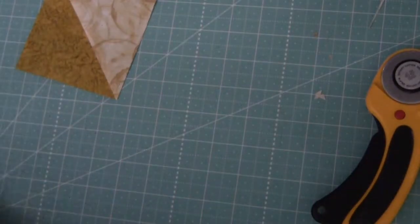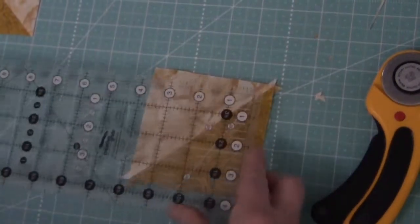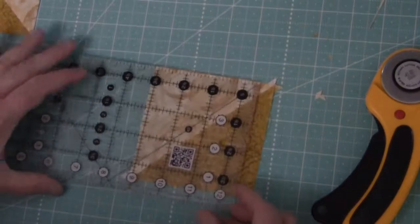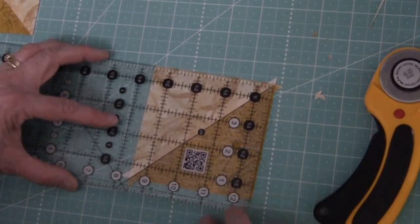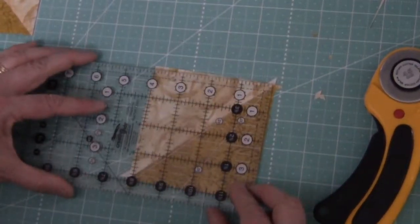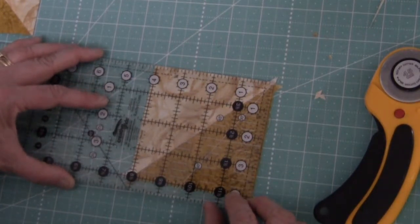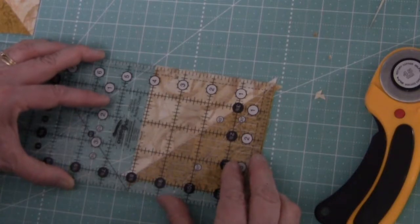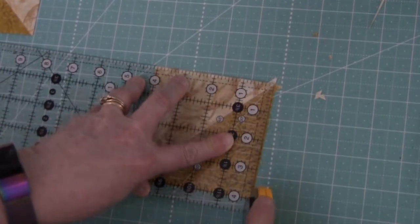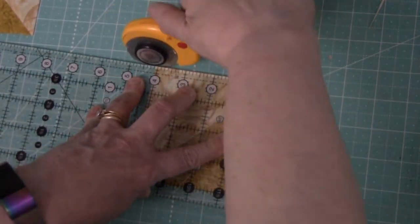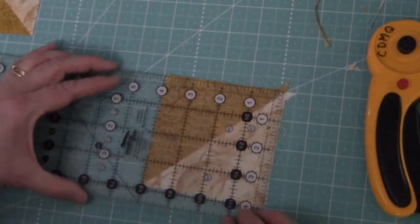The other way to do the trimming is using a regular ruler, and in that case you want to use a corner that's got a 45 degree line. Make sure that 4 inches is on in every direction. I'm going to line up the white diagonal right along the seam line, and again I can trim two sides, rotate the unit and trim the other two sides.